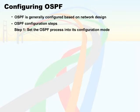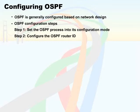The first step is to set the OSPF process into its configuration mode using the 'router ospf process-id' global command. The second step is to configure the OSPF router ID using the 'router-id id-value' router sub-command and assigning an IP address on a loopback interface.